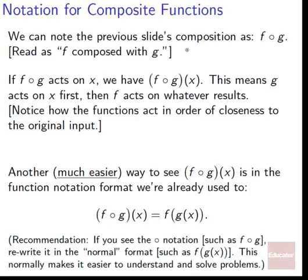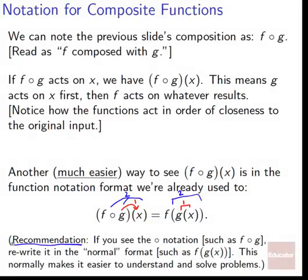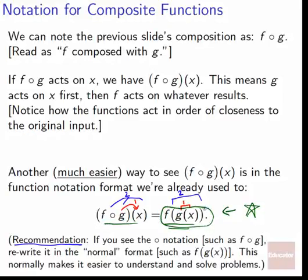There is another much easier way to see f composed with g of x: it's just f of g of x. g is acting first, then f is acting second. I'd personally recommend that any time you see this circle notation, rewrite it in the normal format f of g of x — this will normally make it easier to understand and solve problems. Any time you come up against a problem and you're not sure what to do, break it into f of g of x: f acting on g of x, something acting on something else acting on the input.